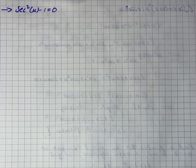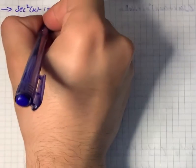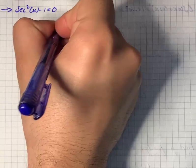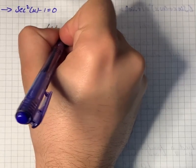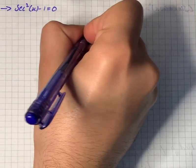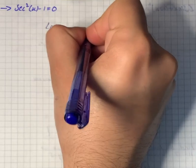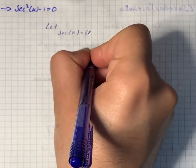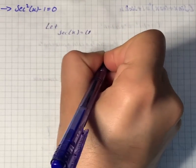So we have a question: sec squared x minus 1 equals 0. Let sec x equals u. So we can write, if it is equal to u, we can write u squared minus 1 equals 0.